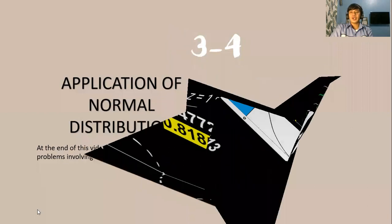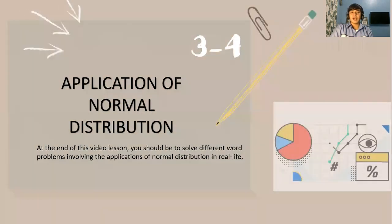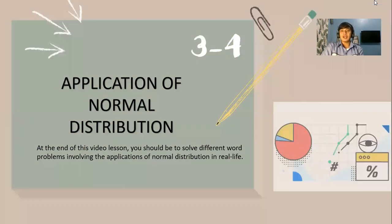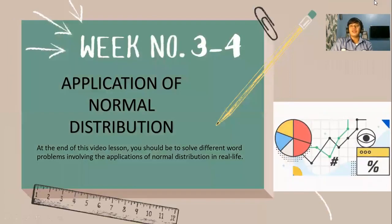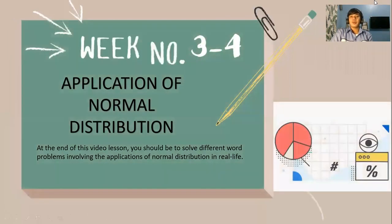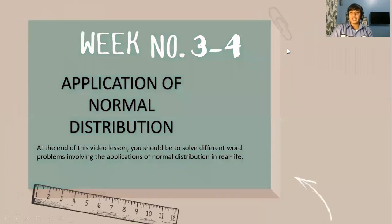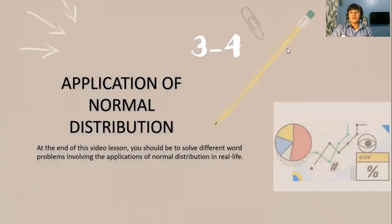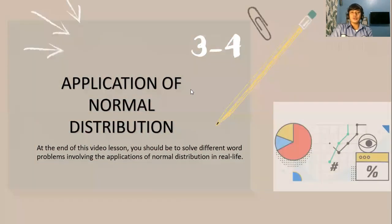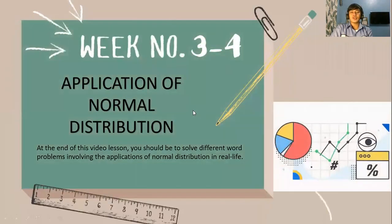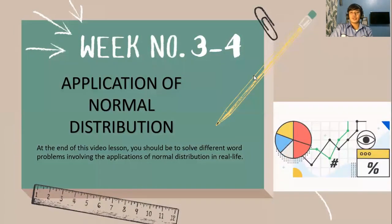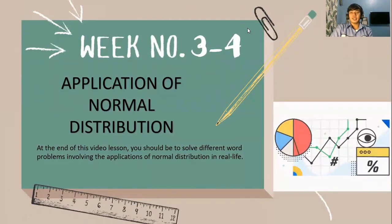Those are some of the examples in finding the areas under the normal curve and their corresponding probability notation. We are still on week three, and you should also watch part four of our video lesson, which will talk about the applications of the normal distribution. This is Sir Peter, your statistics and probability teacher. See you in the next one.